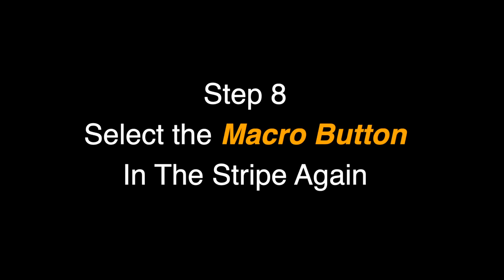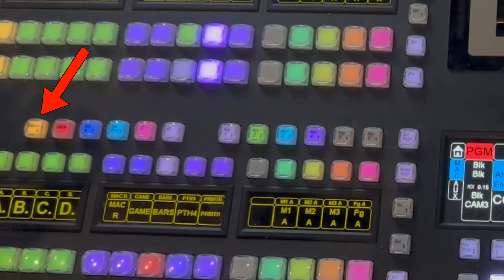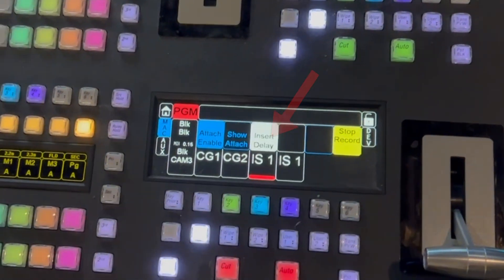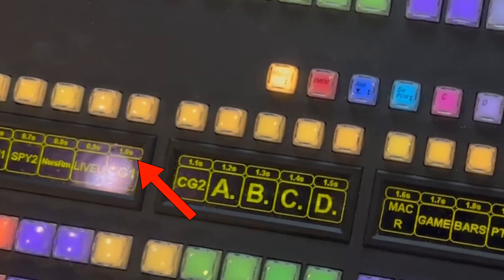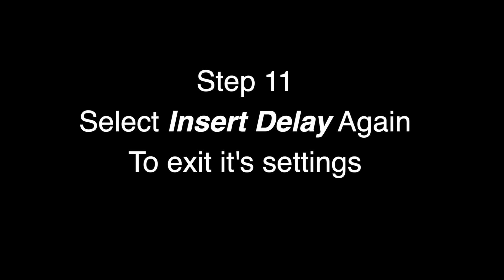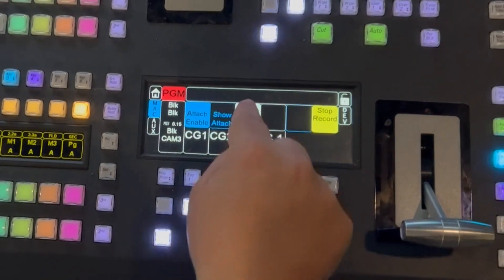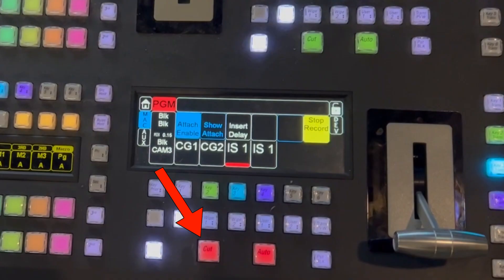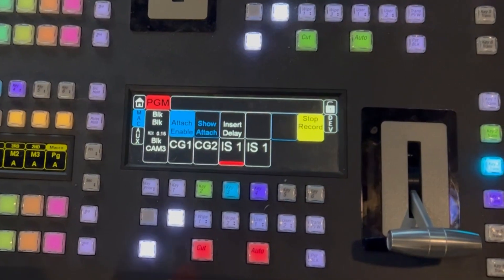After you have your image store set up, click the macro button on the Stripe again. Then on the Stripe's LCD, click Insert a Delay. After clicking Insert Delay, you will notice timing now appears below the macro buttons. Choose one second, then press the Insert Delay button again to exit the settings.